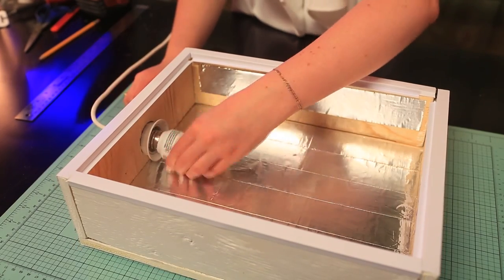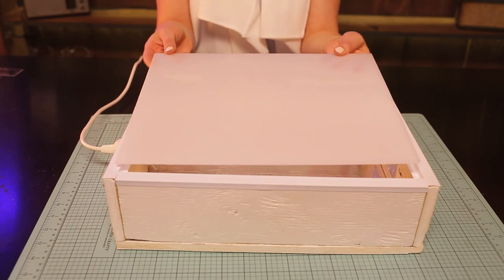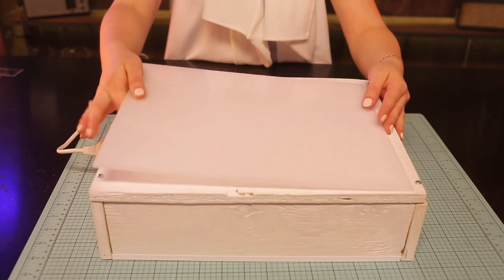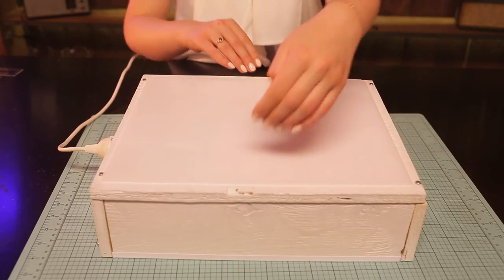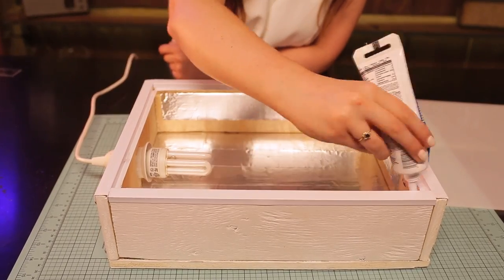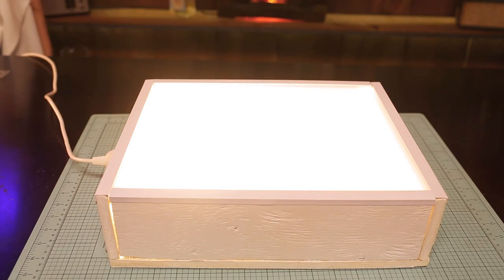For the front piece, we're using this frosted white plexiglass we got cut at a local plastics place. It's very important to make sure your plexiglass is the size of the inside of your box and not the size of your back piece. Using some glass bonding glue, line your PVC edge with glue, place your plexiglass on top and let it dry. Look how good it looks already.